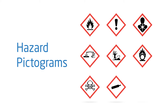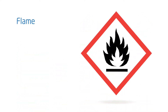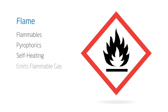Depending on the hazard classification, these eight pictograms can apply to Axalta paint products. The flame pictogram signifies a number of potential hazards, including flammables, pyrophorics, self-heating, emits flammable gas, self-reactives, and organic peroxides.